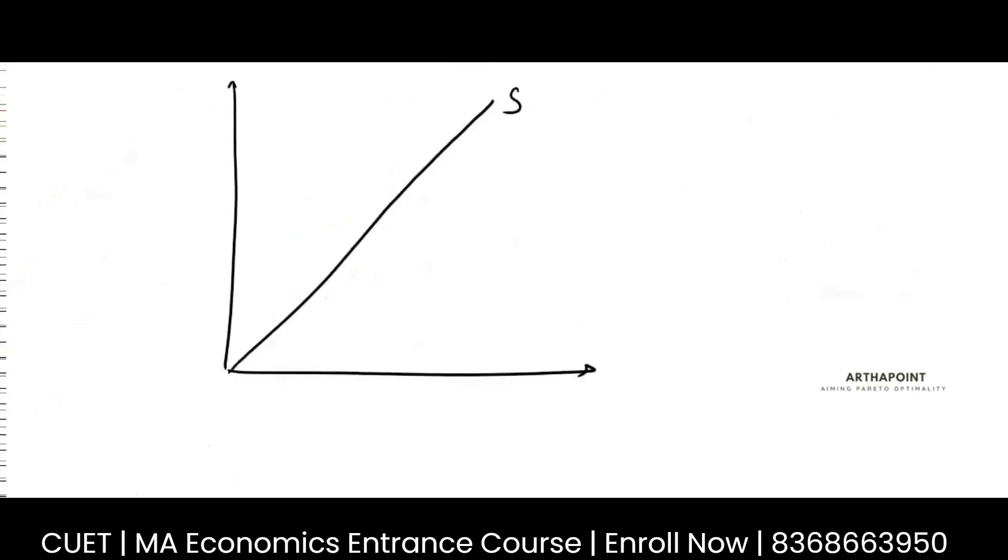this is my supply. This is my demand. My supply is going backward to S dash. This is my something like this. This is my deadweight loss. This is my tax collected. This part.